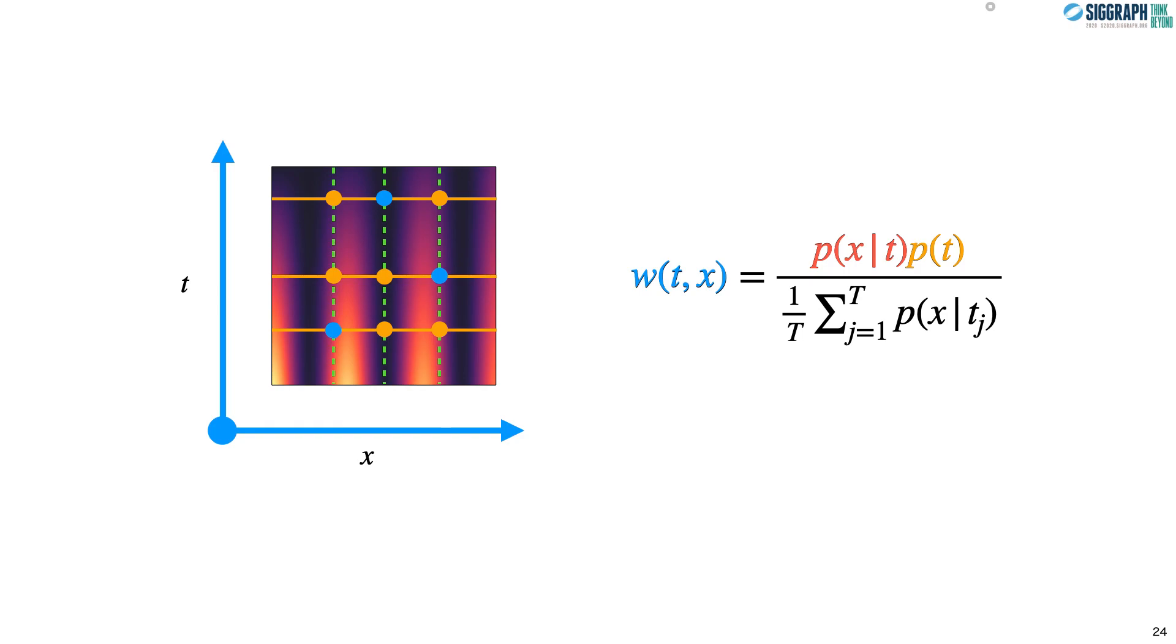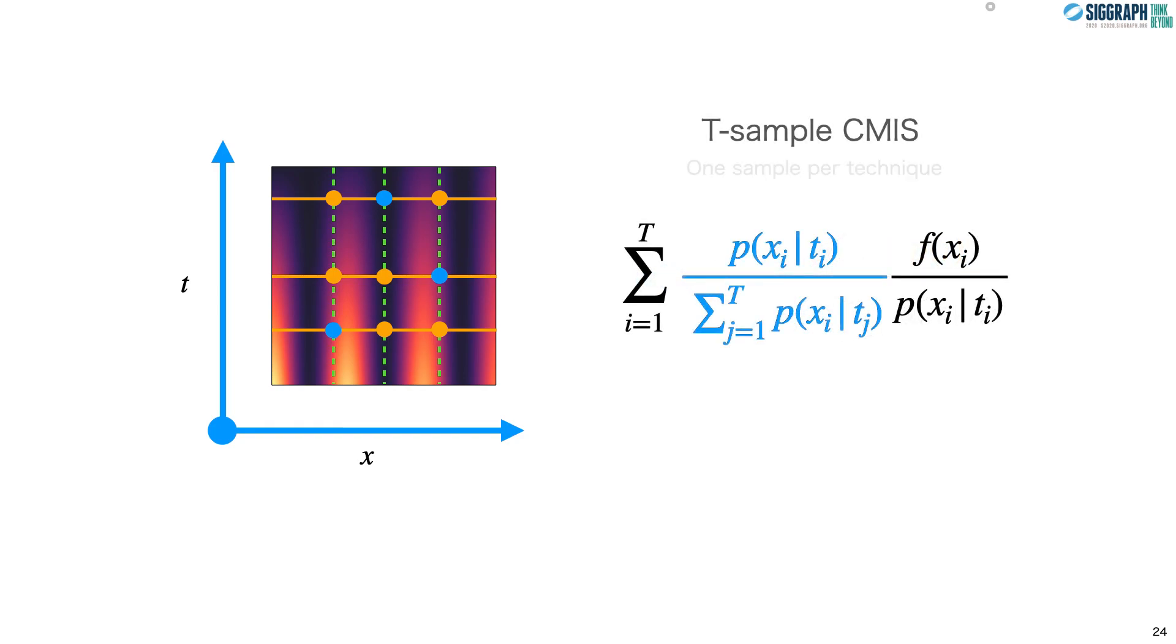If we use these approximated weights in a t-sample CMIS estimator and cancel a few terms, we have the following, which appears to be a multi-sample DMIS estimator with a balance heuristic, but where the key difference is that the techniques are chosen stochastically. We'll refer to this as stochastic MIS. For more details, a more general form, and a proof of unbiasedness, please see the paper.